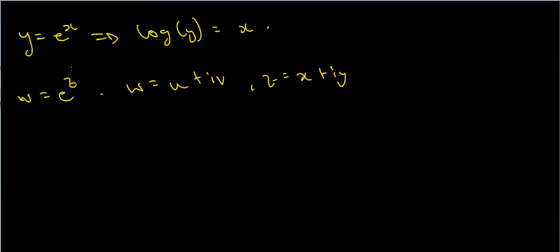What we'd like to do, as we did in the real case, is take logarithms of both sides. But we can't quite do that yet because we haven't actually defined what that means. So let's first look at e to the z and ask: is this an injective function? In other words, is it one-to-one?